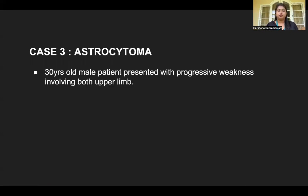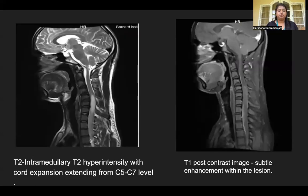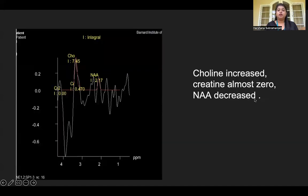The third case is astrocytoma. A 30-year-old male had a history of progressive weakness involving both upper limbs. T2 showed intramedullary T2 hyperintensity with cord expansion extending from C5 to C7 level. T1 post-contrast showed subtle enhancement within the lesion. MRS showed increased choline, decreased NAA, and creatine was almost zero. Biopsy confirmed glioblastoma features.